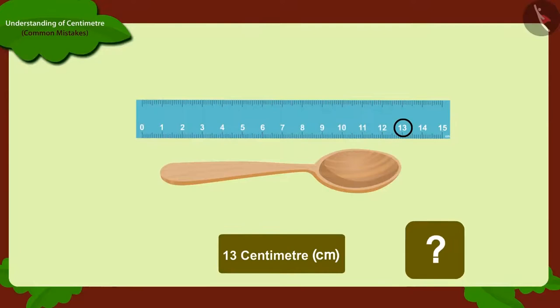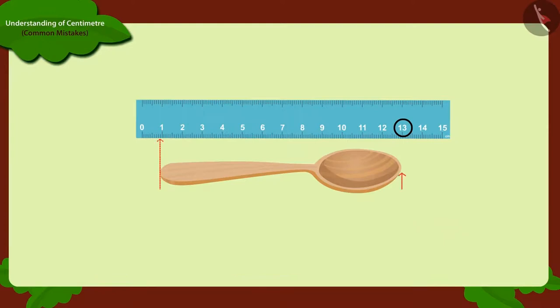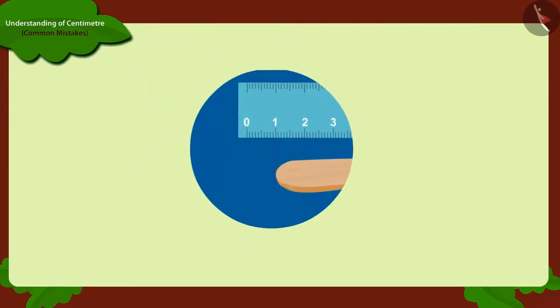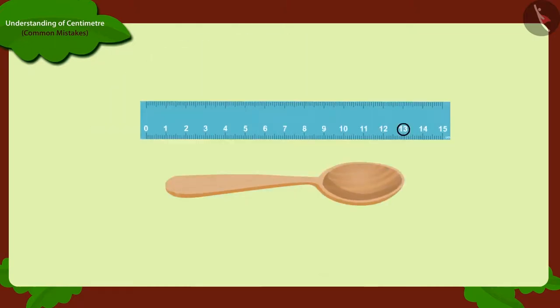Then how did it become thirteen centimetres today? Kids, Can you tell what mistakes Chanda has made here? Yes. This time, when Chanda measured the length of the spoon, she started measuring the length by one instead of starting from zero. So, one centimetre in length of spoon was added.